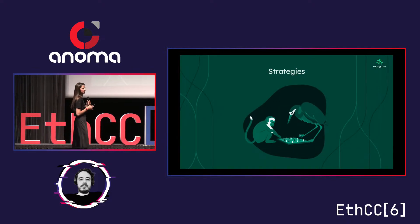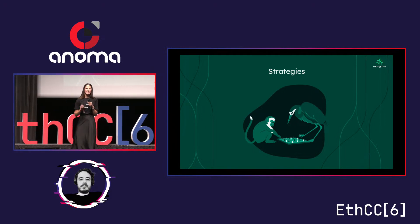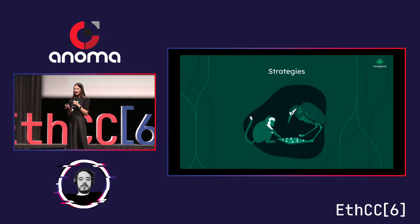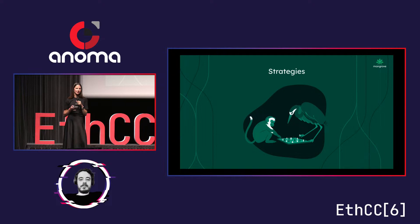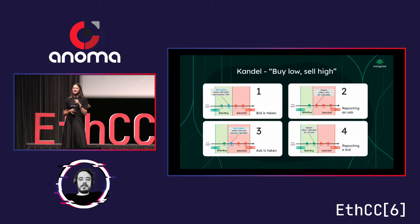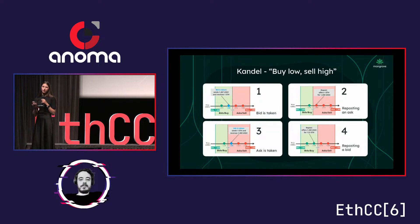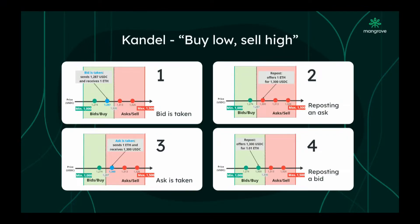All these features open a very wide design space for sophisticated trading strategies. Here at Mangrove, we figured the best way to showcase this is by introducing a simple, easy-to-understand yet super powerful strategy. Let me introduce you to Candle. Candle is an automated market-making strategy that uses on-chain order flow to repost offers instantly with zero latency. Candle posts bids and asks within a predetermined price range. If an ask is taken, Candle posts a bid on the other side of the book and vice versa. Essentially, the main goal of the strategy is to buy low, sell high — therefore it makes profit from the spread.